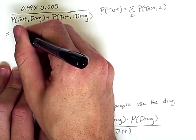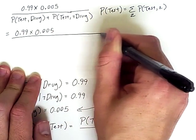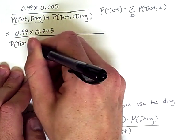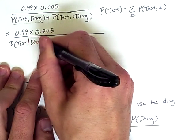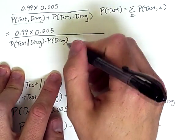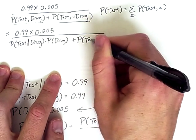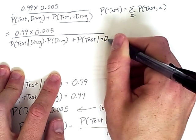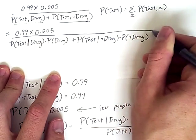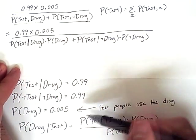We have first the term on top, 0.99 times 0.005 over... So this term becomes the probability of a positive test given that the individual is using that drug times the probability of someone using that drug. And then this term becomes the probability of getting a positive test given that someone does not use the drug times the probability of not using the drug. So we're getting closer. This value is right here. That value is right here. So we can plug those in.